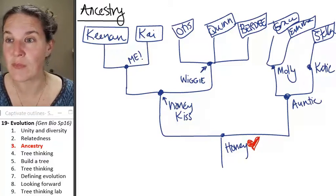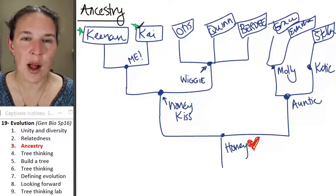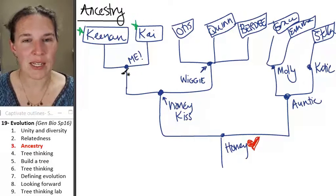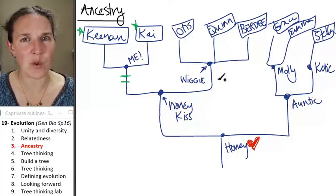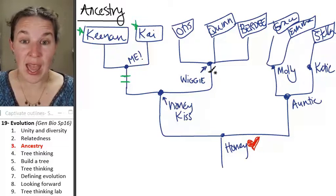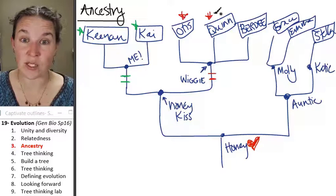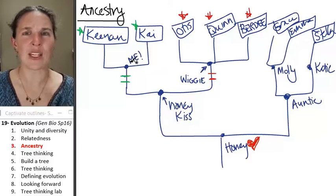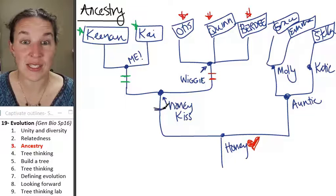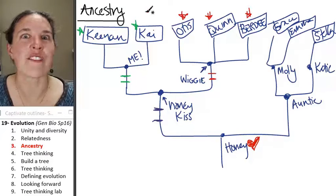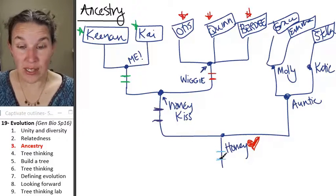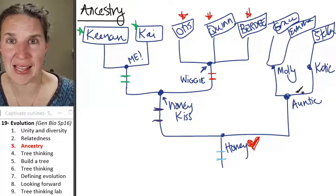Now, do you agree that Kenan and Kai probably share characteristics with me that make them really related to each other, characteristics that maybe they don't have with Uncle Wiggy? And in fact, do you agree that probably Uncle Wiggy has some characteristics that are shared by Otis, Quinn, and Bertie that maybe we do not have? But do you agree that Honeykiss probably hooked us up with some characteristics that all of us have? And my honey probably hooked us up with characteristics that everybody has. Do you see this?